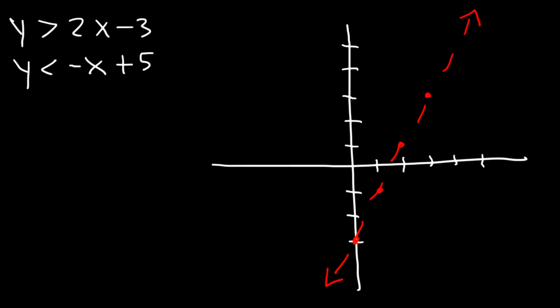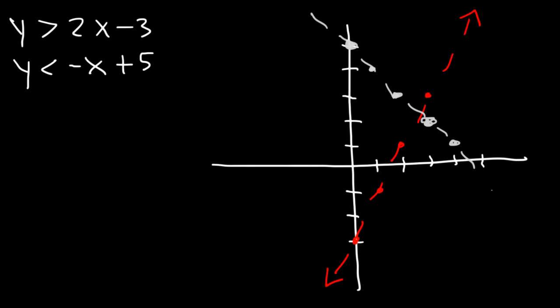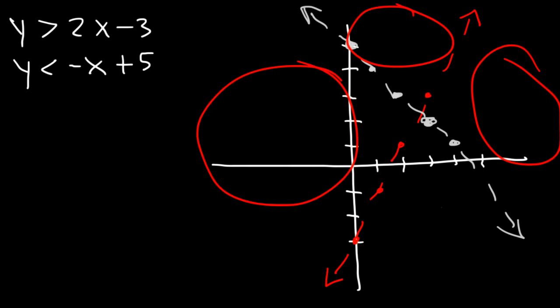Now let's graph the second equation in a light gray color. The y-intercept is 5 and the slope is negative 1. So as we travel one unit to the right, we need to go down one. It's going to be a dashed line as well. Now, which of the four regions should we shade — this region, this region, this one, or that one?